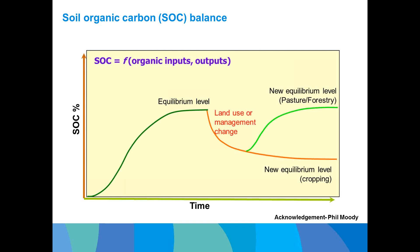Soil organic carbon balance is a function of organic inputs and outputs, and will be significantly altered by land use change. For example, if land is cleared to convert pasture or forestry to cropping, there will be a negative balance, and it will reach a new equilibrium. Conversely, if cropping land is converted back to forestry, soil organic carbon will build up, showing a positive balance before reaching another equilibrium.